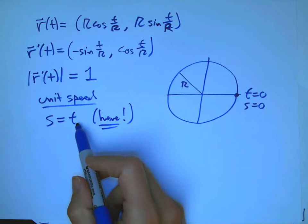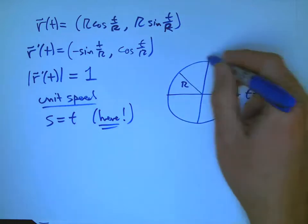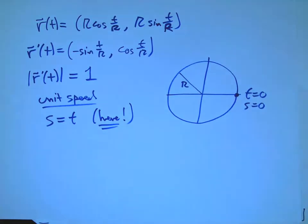And remember, t is something that depends upon the parametrization. It depends upon how you walk or crawl or fly or race around the curve. S does not. But in this case, they're equal and so there's not going to be a problem.